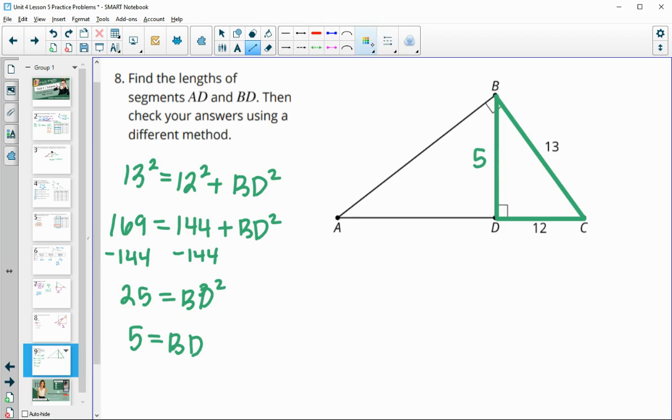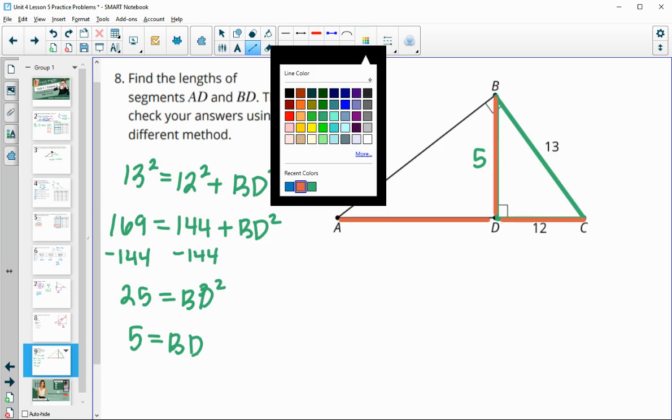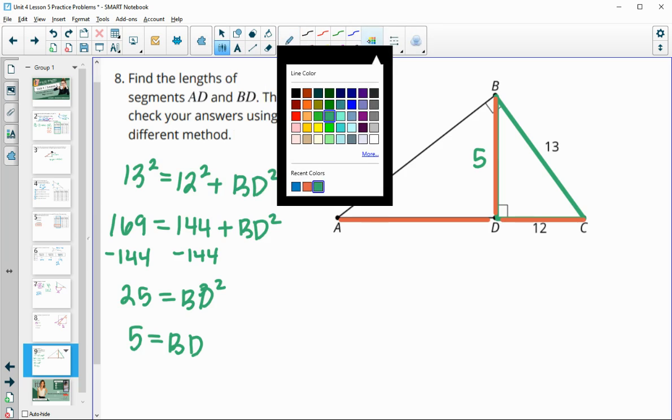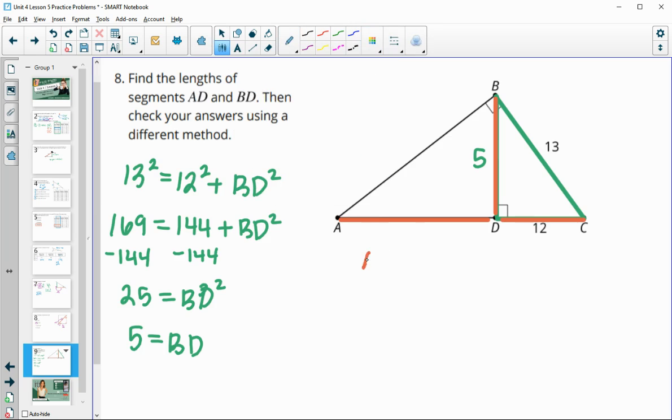So then when we go to find AD, hopefully you remember that when you drop an altitude to the hypotenuse from a right triangle, that it splits up this hypotenuse into proportional pieces. So we can set up a proportion here. So we have AD divided by the altitude of 5 will equal 5 divided by 12. So then we can cross multiply and divide. So then AD is going to equal 25 divided by 12. So 25 divided by 12 is about 2.1.